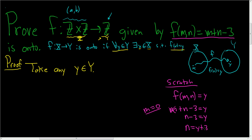And it looks like that works. If we take m equals zero, and n equals y plus three, then our pair will be (0, y+3). Let's go ahead and prove it.